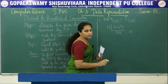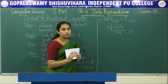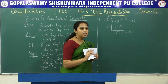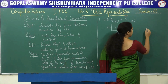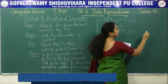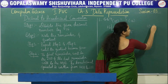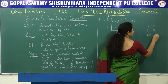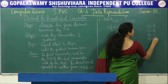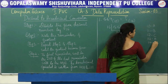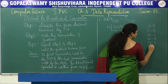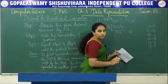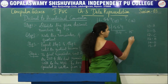But in hexadecimal we are not going to write 15 as it is. As mentioned in the previous session, in hexadecimal we represent 10 as A, 11 as B, 12 as C, 13 as D, 14 as E, and 15 as F. So instead of writing 15 here, I am going to represent it as F.